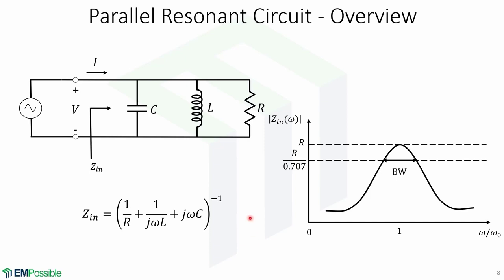Now let's look at the parallel resonant circuit. Here is a picture of a parallel RLC resonant circuit. The input impedance is given by the inverse of the sum of 1/R, 1/(j*omega*L), and j*omega*C. This is the normalized frequency response of the parallel resonant circuit, where 1 equals the resonant frequency. The vertical axis is the input impedance magnitude, and the half power bandwidth is shown here.